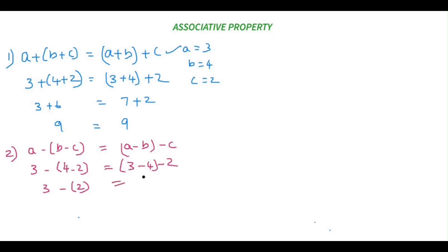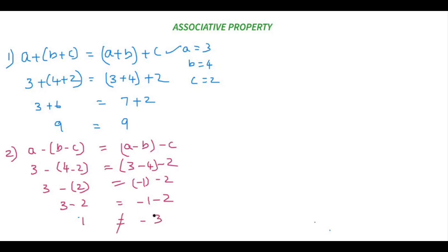On the left side, inside the bracket we have 4 minus 2, which is 2, so we get 3 minus 2, which equals 1. On the right side, 3 minus 4 is negative 1, and then minus 2 — because they have the same sign we add, giving minus 3. So 1 is not equal to minus 3, meaning a minus (b minus c) is not equal to (a minus b) minus c. Associative property does not hold good for subtraction.